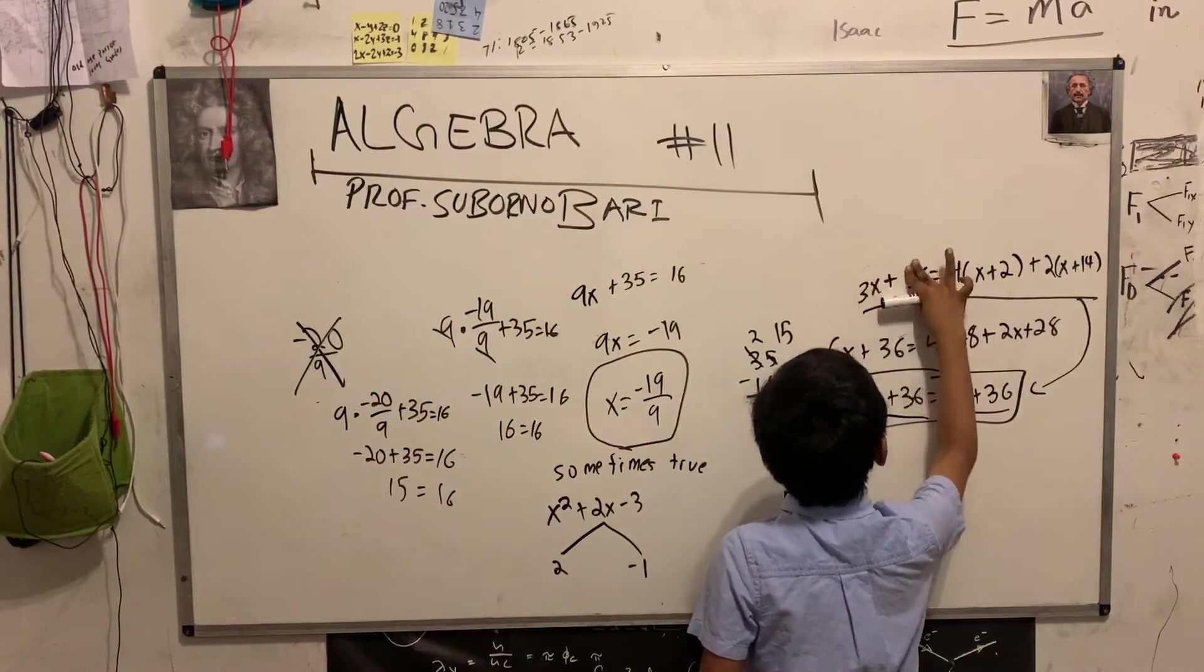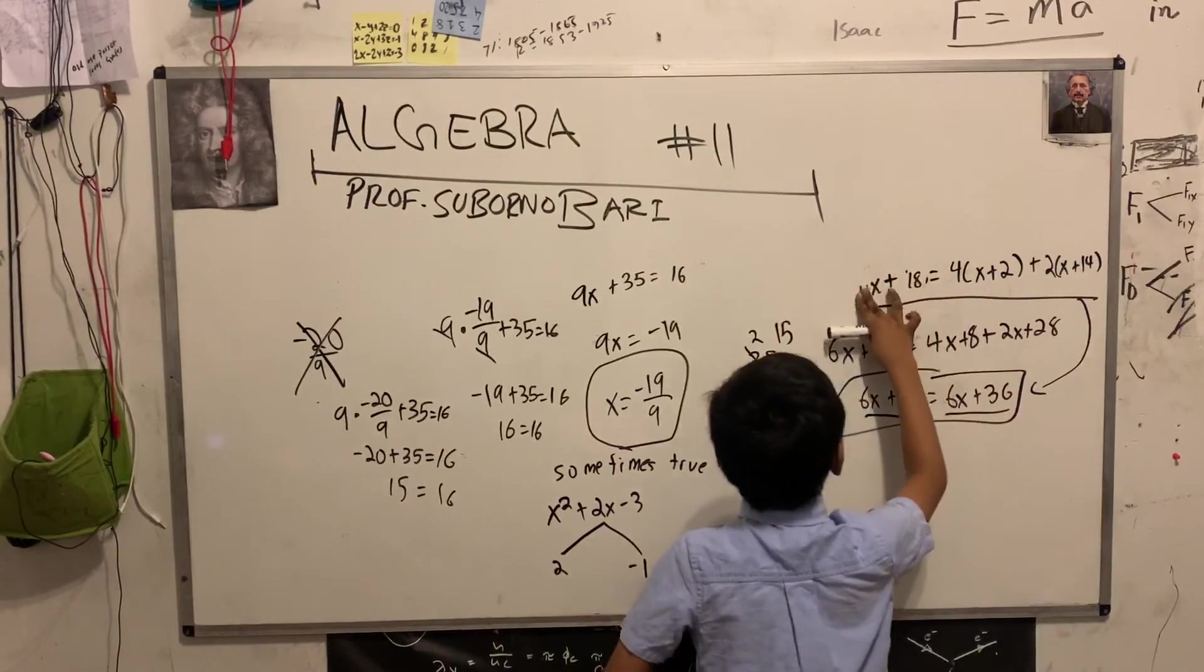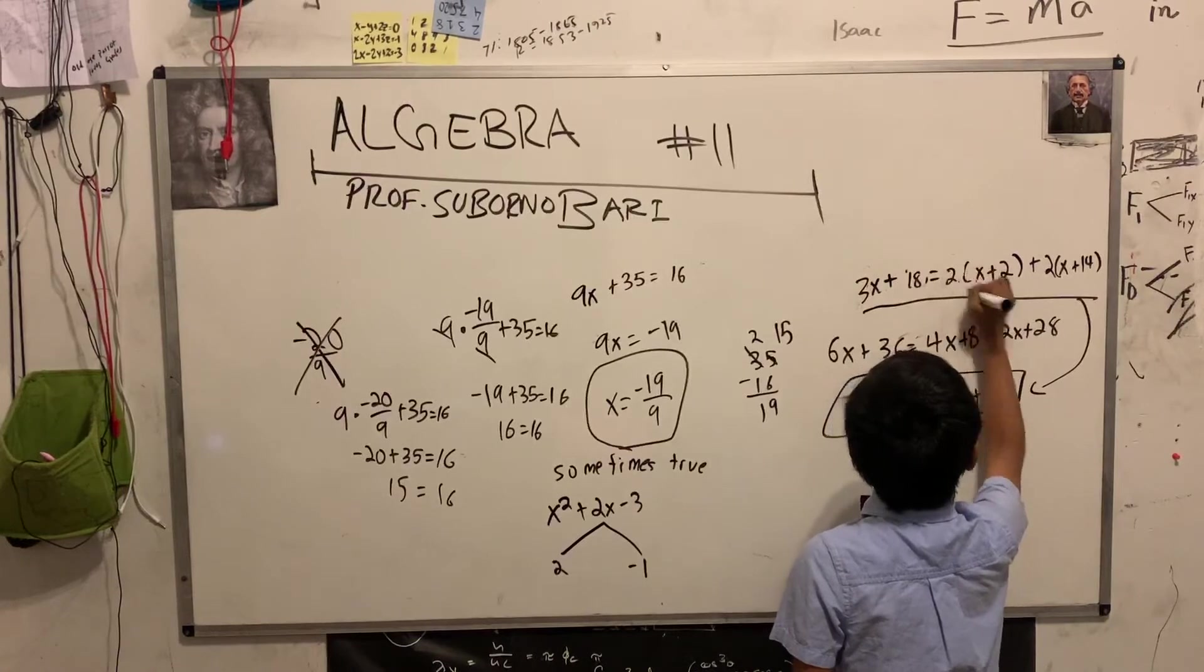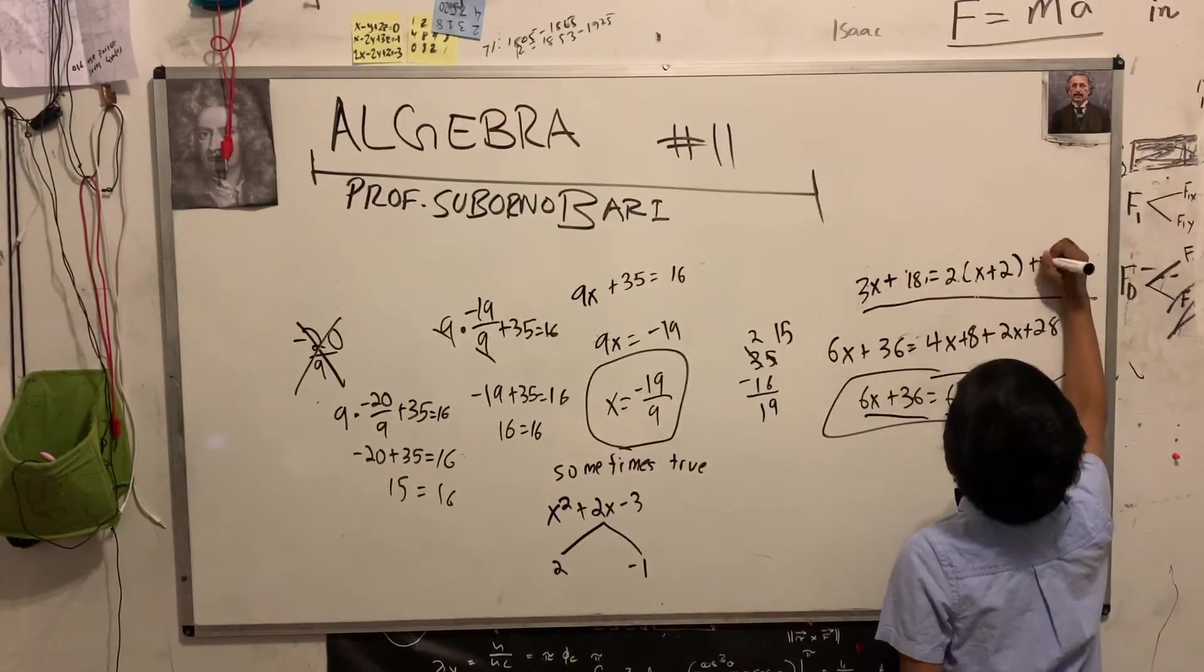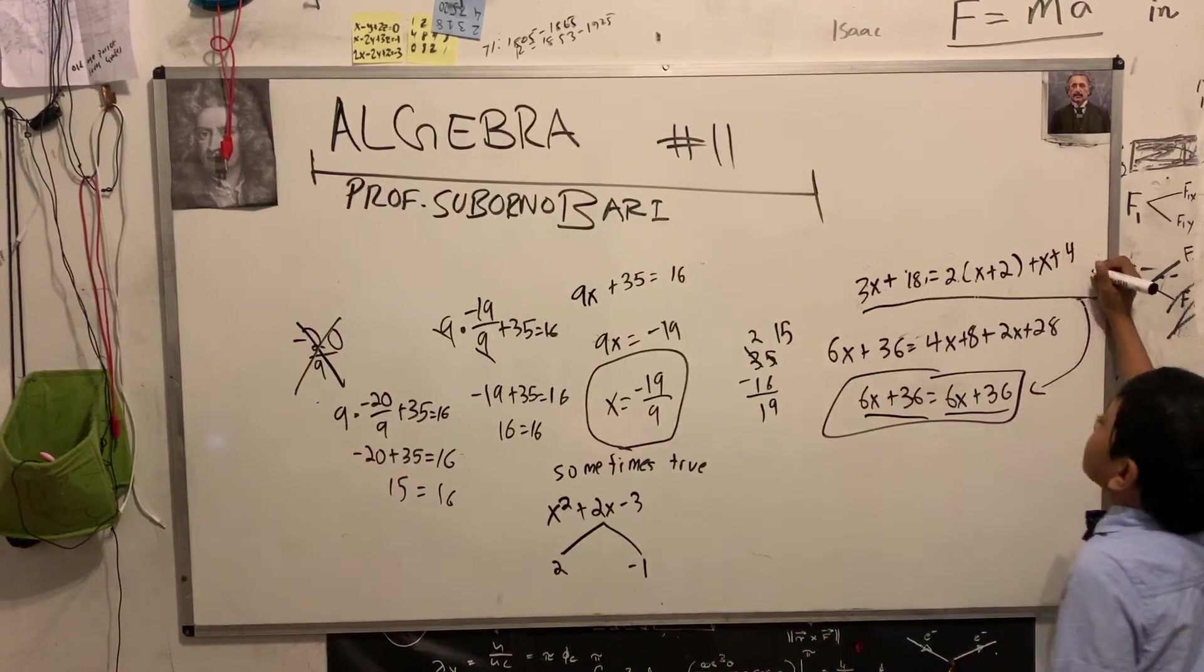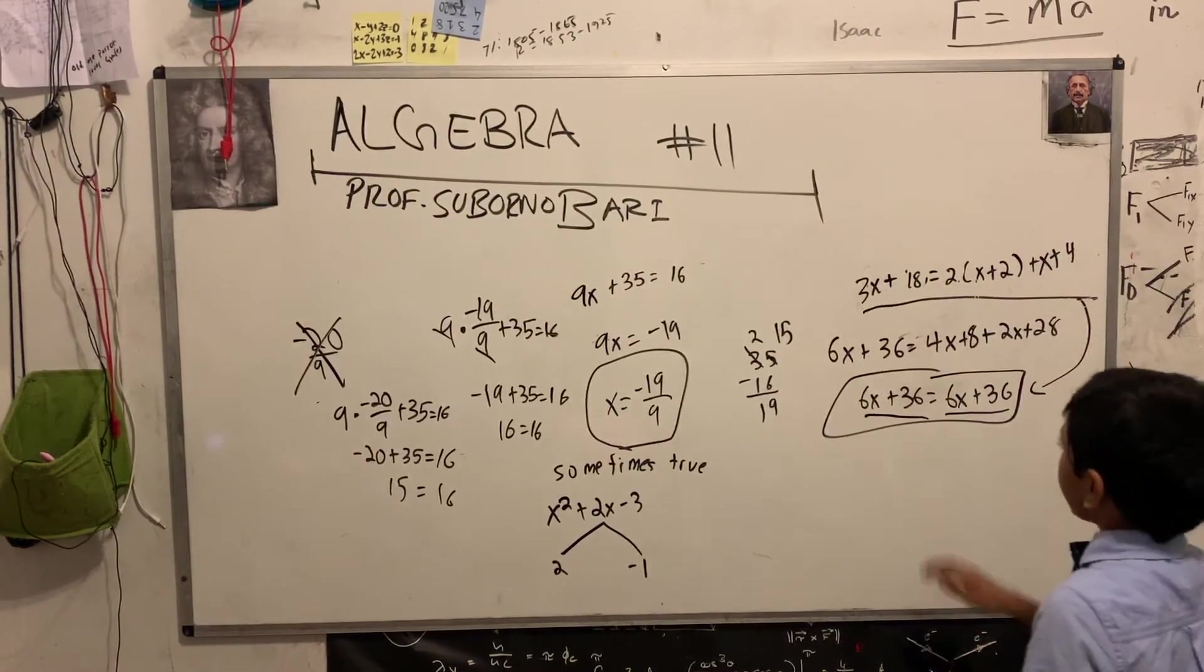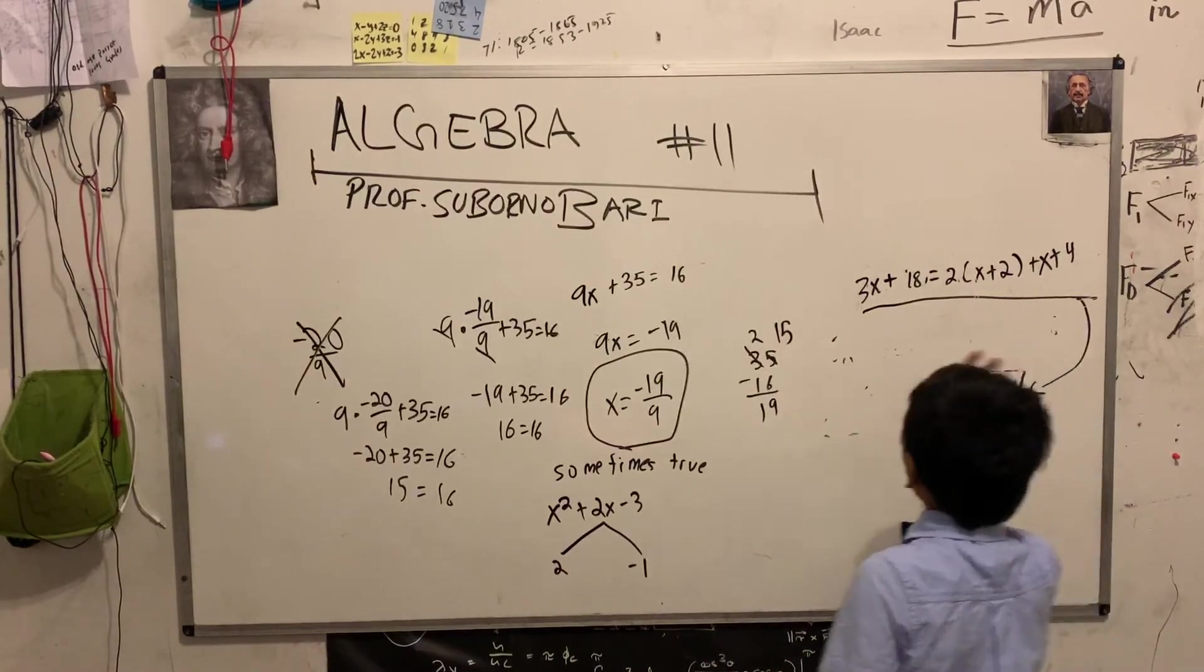And, just because I love algebra, I'm going to simplify this into 3x plus 18 equal to 2x plus 2 plus x plus 4. The beauty of algebra. Which still is true for everything. It just simplified it down to its core.